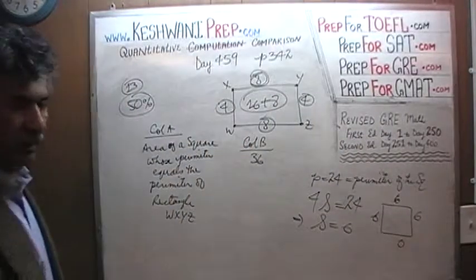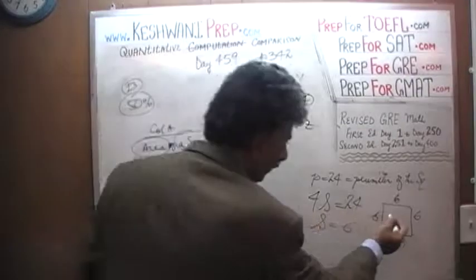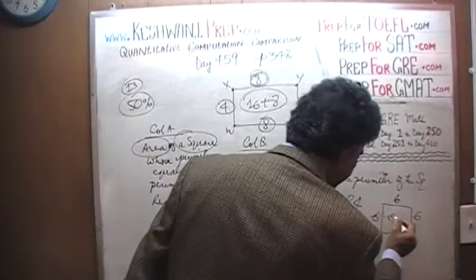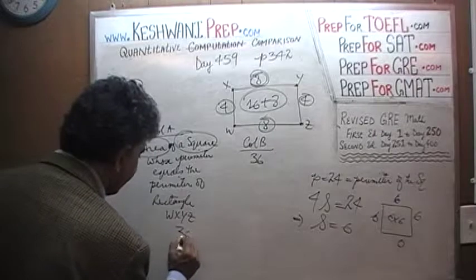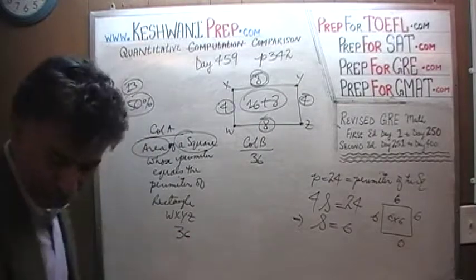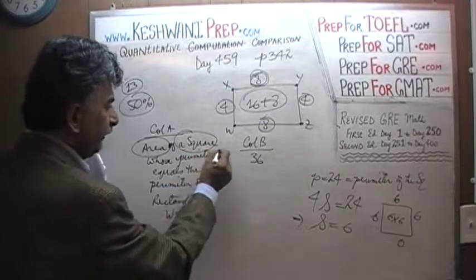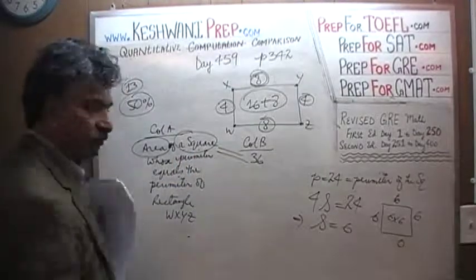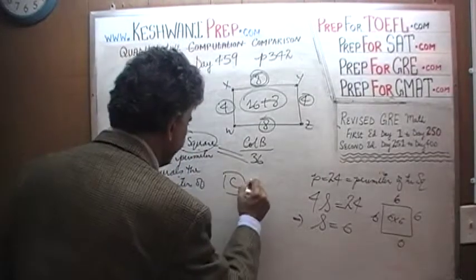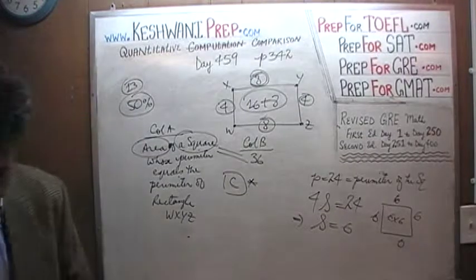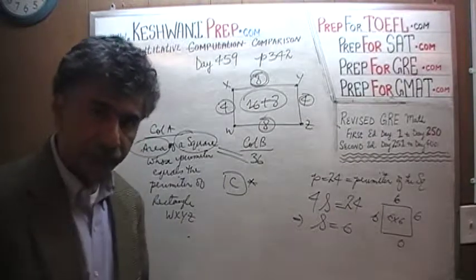Now we have to compare the area of the square, which is 6 times 6, equals 36, versus column B, which is also 36. The answer is C. I'll see you tomorrow. Bye now.